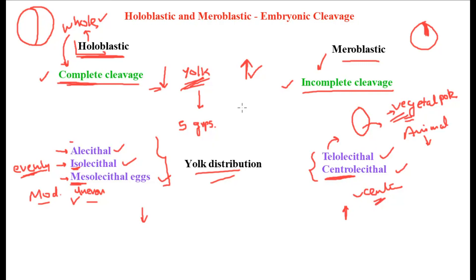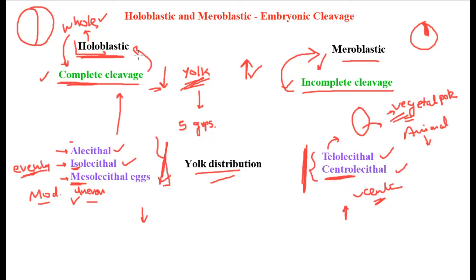As you can see, the three egg types — alecithal, isolecithal, and mesolecithal — are placed under holoblastic cleavage, and the two types — telolecithal and centrolecithal — fall under meroblastic cleavage. This makes sense because telolecithal and centrolecithal eggs have high yolk content, so they follow incomplete or meroblastic cleavage, while the low-yolk eggs follow complete or holoblastic cleavage.